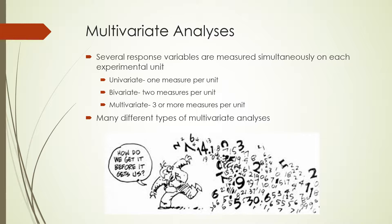Multivariate analyses refer to that class of statistical analyses where several response variables are measured simultaneously on each experimental unit. In our fields, this will often be things like vegetation parameters, cover, height, species diversity, and so on. In aquatic environments, it might be the length and depth of pools, water temperature, other kinds of water quality measures, and so on. We often feel like there are a number of different factors that could be influencing species, so we measure as many of those that we think are important as possible.